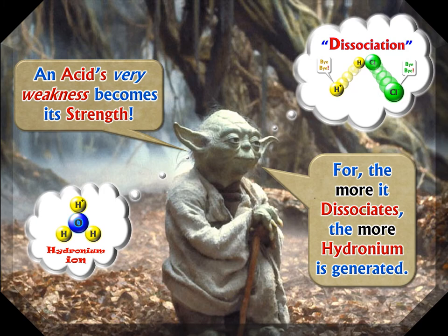An acid's very weakness becomes its strength. If it's a weak molecule — not held together well — it's going to get ripped apart, and that makes a very strong, potent acid. Because the more it dissociates, which basically means falls apart, the more hydronium is generated. Hydronium is the real behind-the-scenes agent of the acid — its avatar, the worker that does everything that acids get credit for.